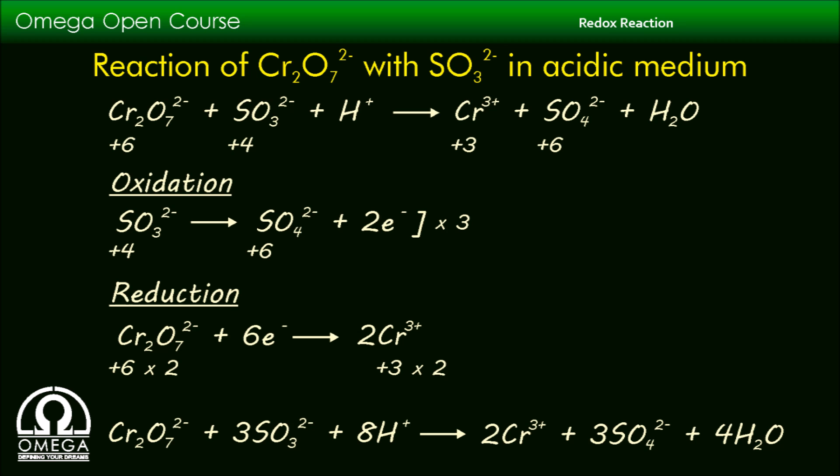Now our reaction is balanced and the balanced chemical equation is Cr2O7^2- plus 3 SO3^2- plus 8 H+ reacts to form 2 Cr^3+ plus 3 SO4^2- plus 4 H2O.